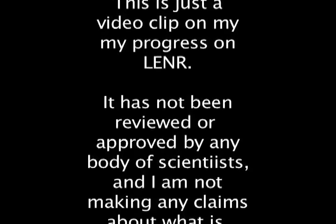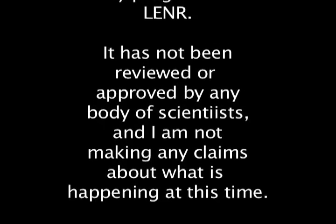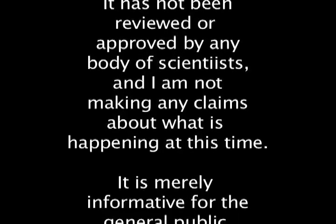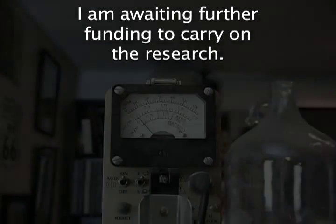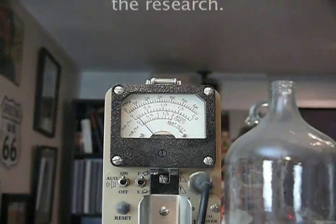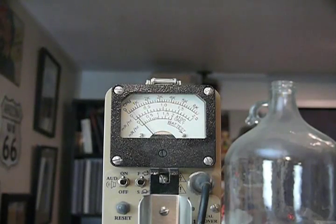This is a standard Geiger counter that measures alpha, beta, and gamma rays with its transducer. Right now I have it on the lowest scale, which is times 0.1, and as you can tell there is some activity going on, very low-level activity, which is what I want.